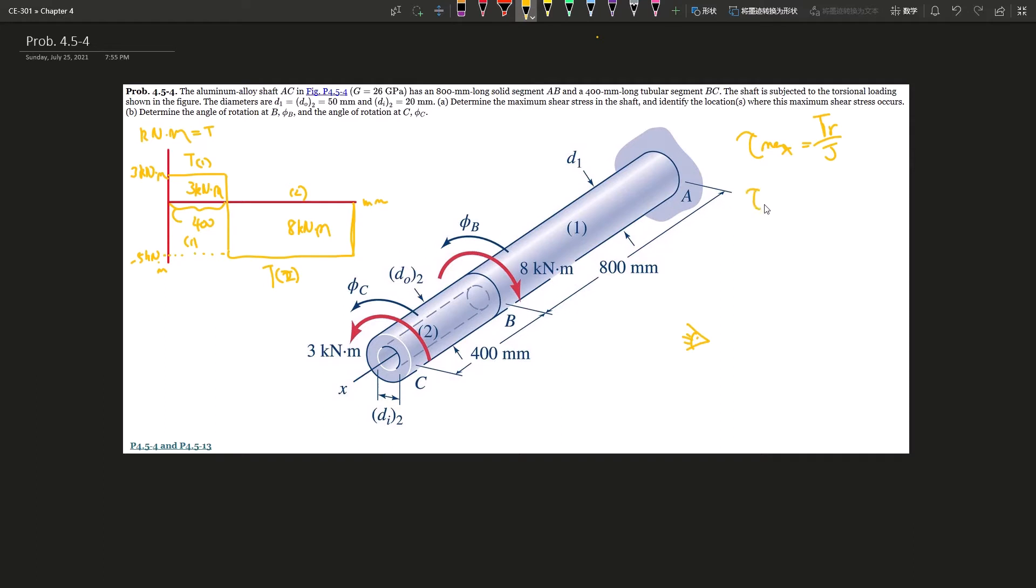Since there are two sections, we can just do them separately. So we have tau t2 max, which is this one over here. t2 max equals t2, so it's negative 5 kilonewton times r. What is r, r is 50 millimeters, so 0.05 meter over by j. What is j?